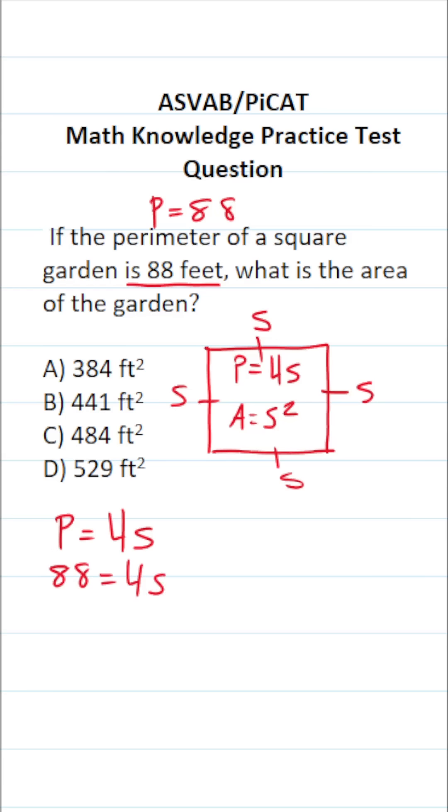Now we can solve for S, the side length of the square, simply by dividing both sides by 4. In doing so, this crosses out, leaving us with S over here. 88 divided by 4 is 22. So we can see the side length of this square is 22 feet.